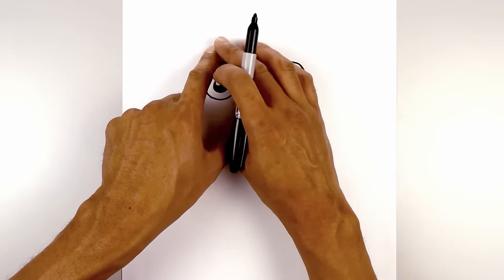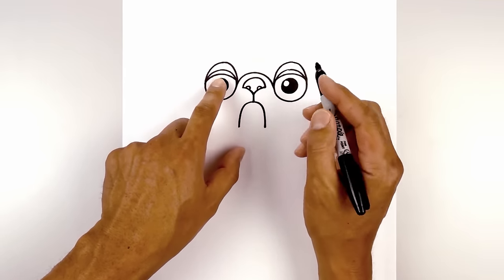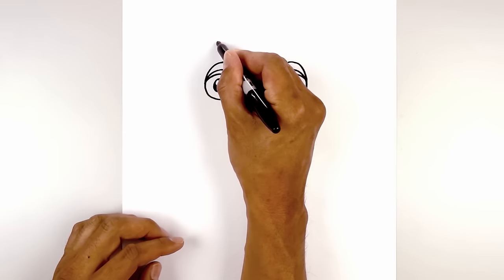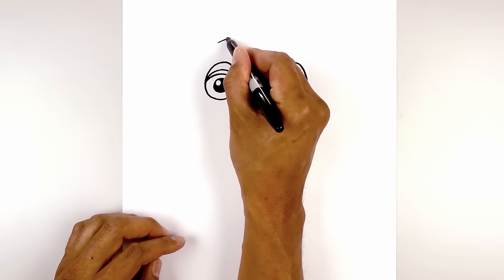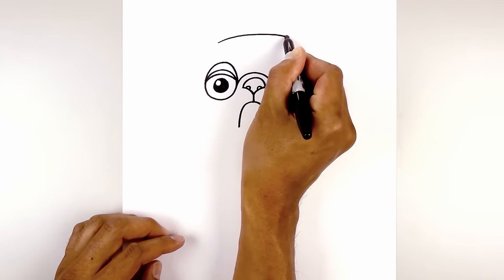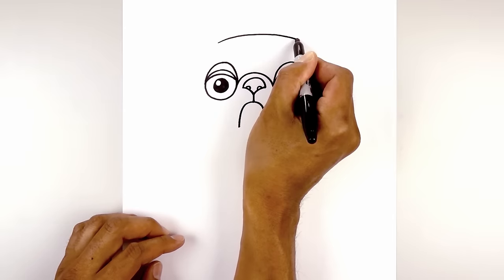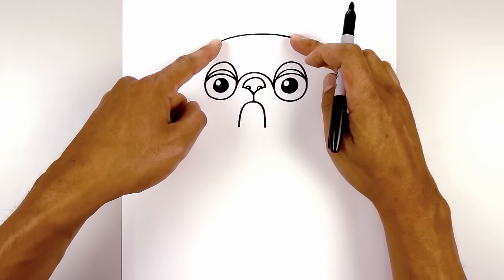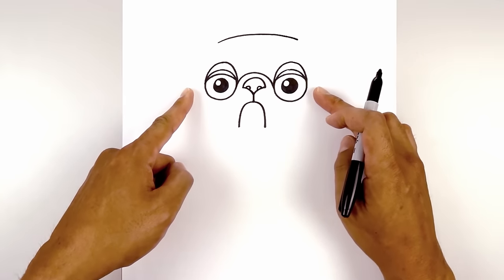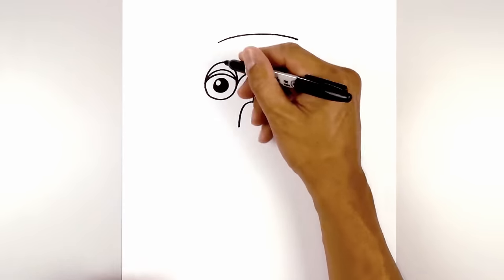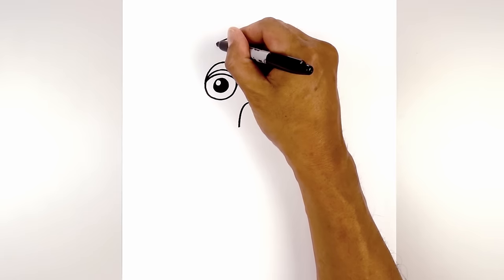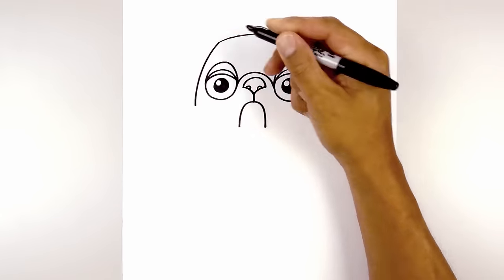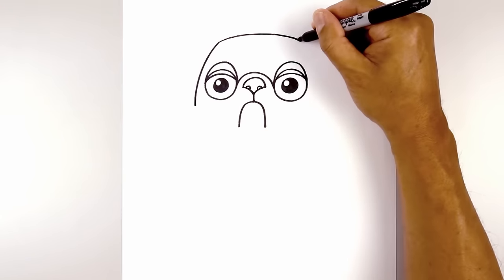Now we're going to move up and draw on the top of the head, directly above the left eye. We're going to draw a curve that goes up in the middle and then back down on the right side. Then from here we're going to curve out and then down towards the side of the head, bringing that down to right about there.